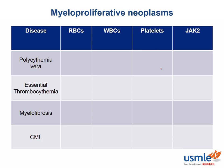Of these four, CML is the only one that features the Philadelphia chromosome. JAK2 mutations are also common for the myeloproliferative disorders, with only CML not having an associated JAK2 mutation.